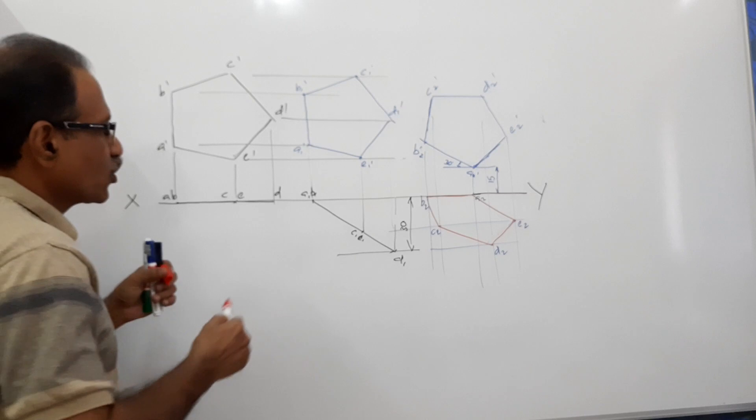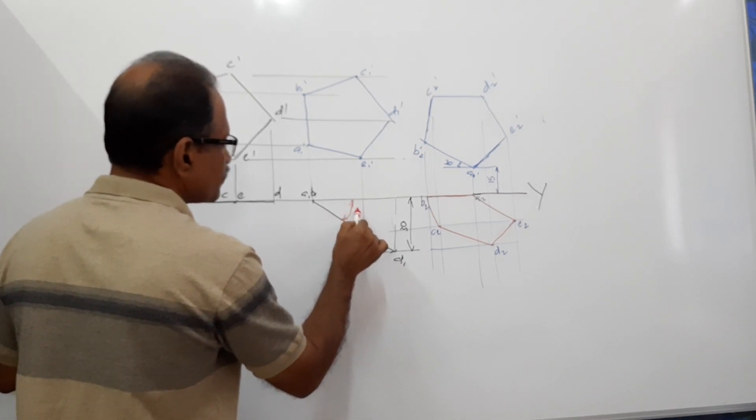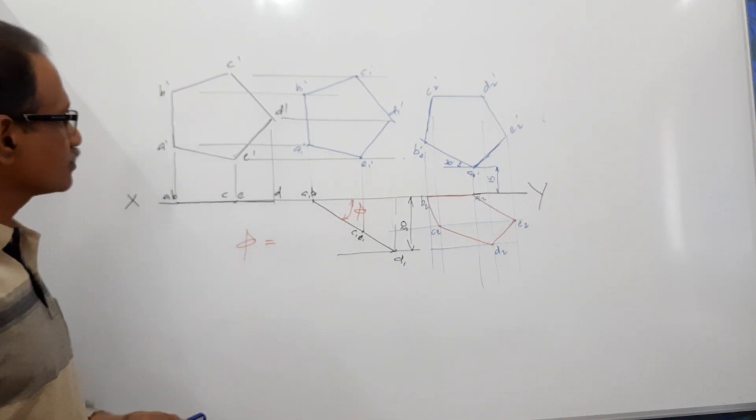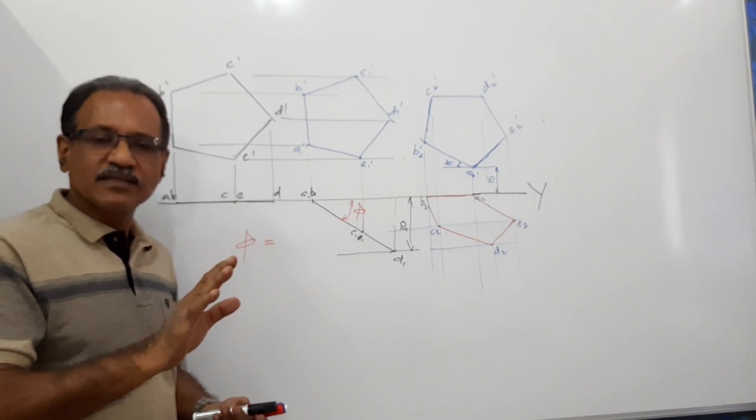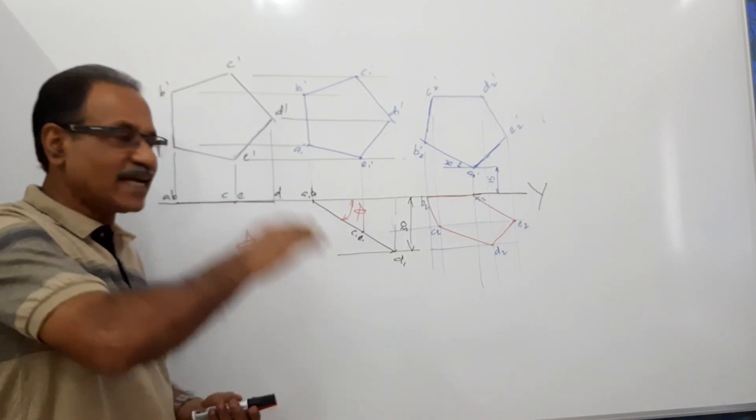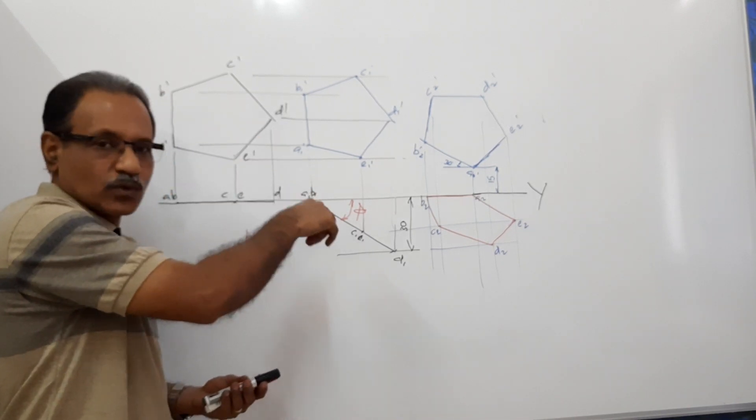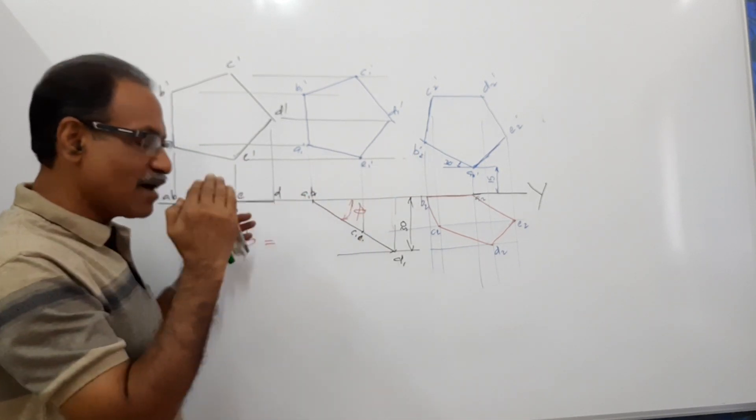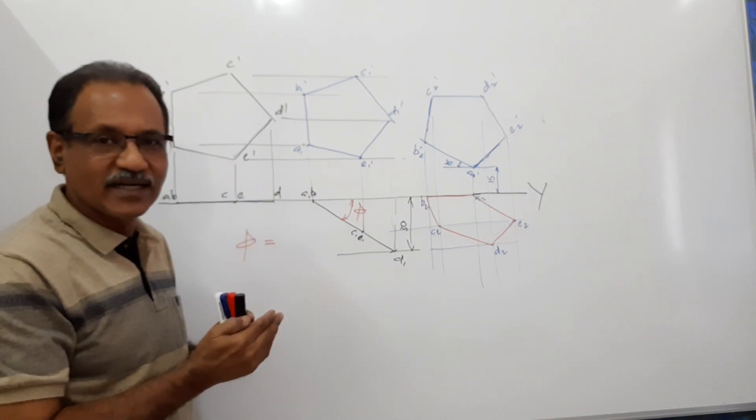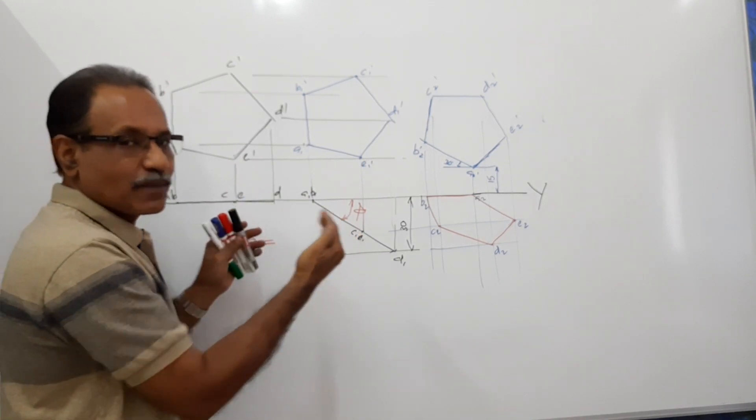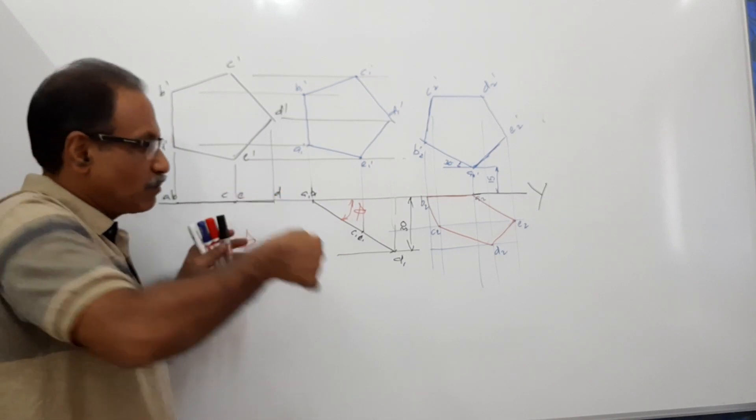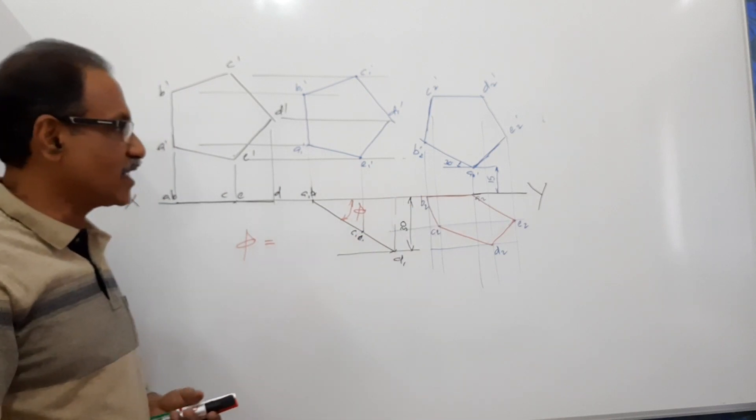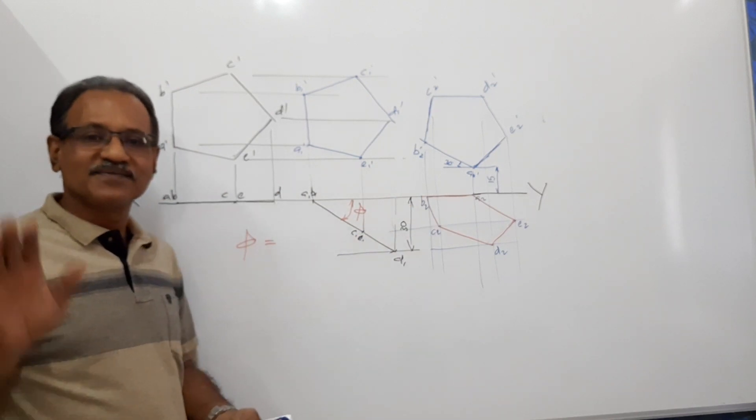Now, after drawing, you are asked to find out what is this inclination. Phi equals so and so, answer. It's a simple question. The lamina is lying on VP on a side. That side makes some angle to HP, 30 degrees, and the surface of the lamina makes some angle to VP. That angle is not given. Instead, the position of the far back corner is given from VP, 30mm. So when you make this 30mm, make that surface make an angle to VP. That you have to measure and give as an answer. Okay, thank you.